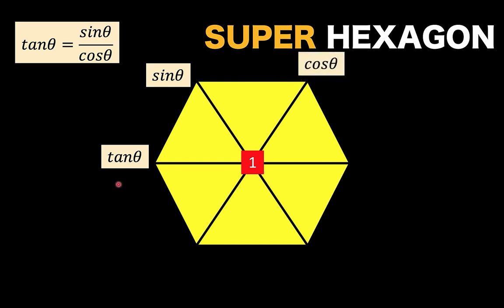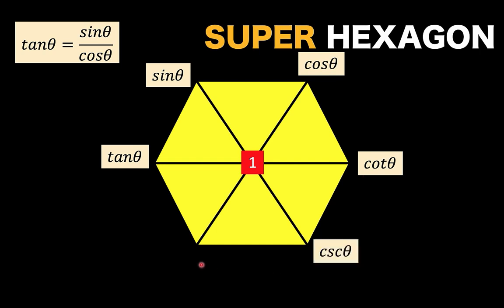Then, opposite tangent is the cotangent, so we put cotangent theta here. If we divide the super hexagon into two hemispheres, the right side contains all trigonometric functions that start with the letter C. So we put cosecant and the remaining function, secant theta, in the remaining slot. We have now constructed our super hexagon.